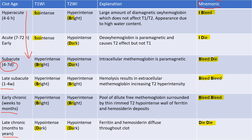You have to remember this particular mnemonic. In case of hyperacute hematoma, it is 'I BLEED' — meaning iso intense on T1 and bright, that is hyper intense, on T2.